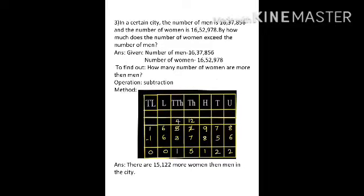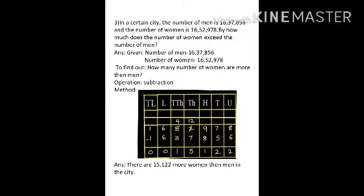Here the women are more and the men are less. They are asking how many women are more. Write down given: number of men — 16,37,856; number of women — 16,52,978. What you have to find: how many more women than men. The keywords are 'exceed' and 'how much' — underline both. Operation: subtraction. Now make the chart from 10 lakhs because the number is 7 digits. Draw it properly with pencil and scale.